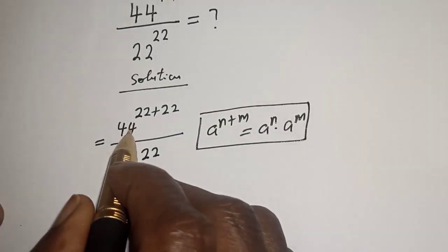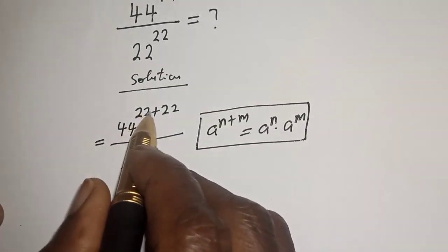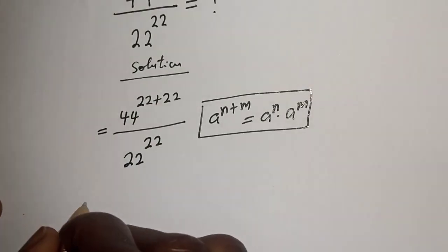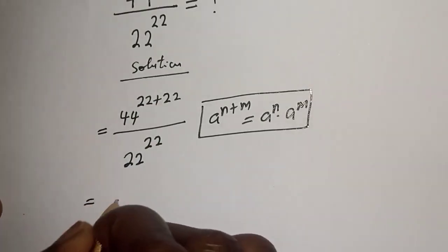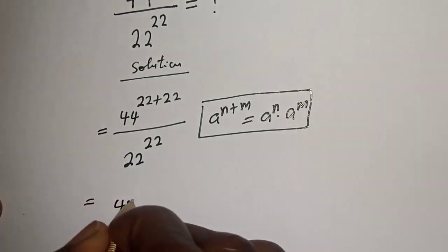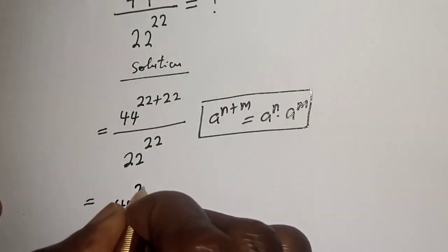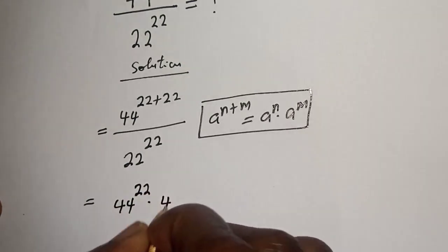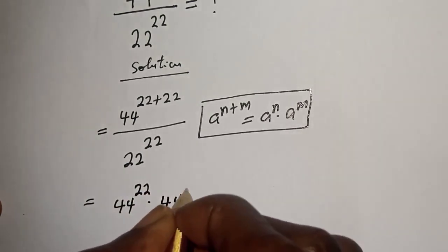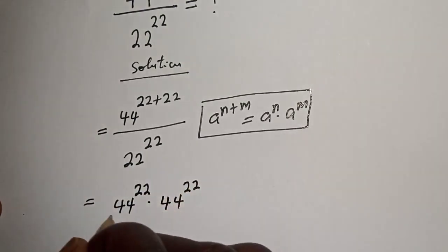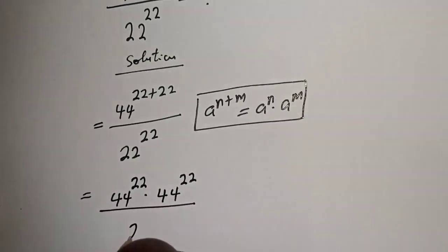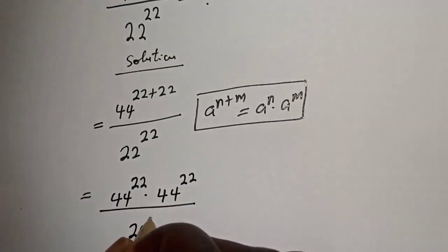Then 44 raised to power 22 plus 22 can be written as 44 raised to power 22 multiplied by 44 raised to power 22, divided by 22 raised to power 22.